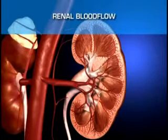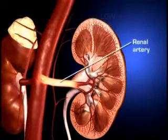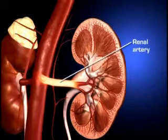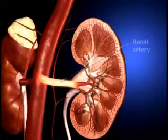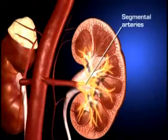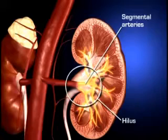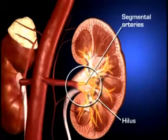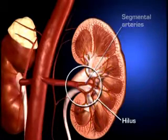Each kidney is supplied with blood by a single renal artery that arises on its respective side of the aorta, before dividing into five segmental arteries that enter the hilus. Within the kidney, each segmental artery branches into several lobular arteries.